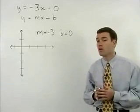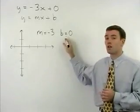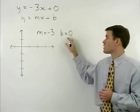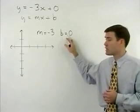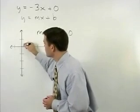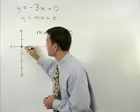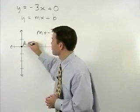To graph our line, we start with the y-intercept. So our first point is at 0 on the y-axis, and we call that point A.